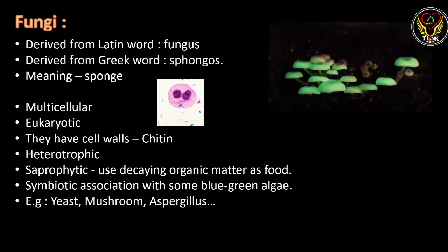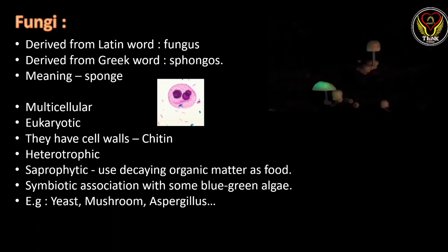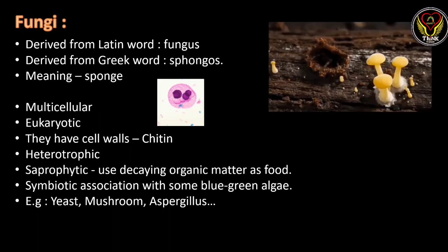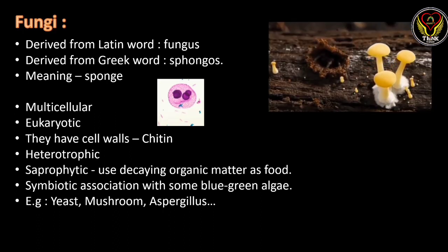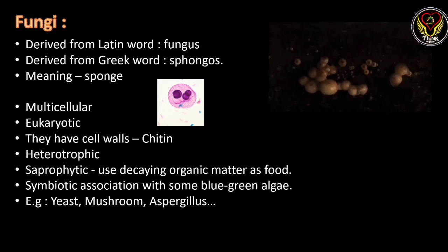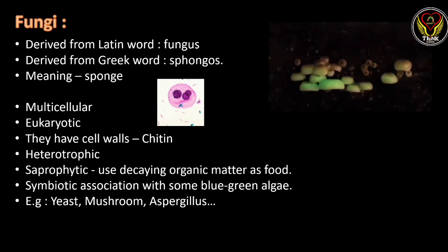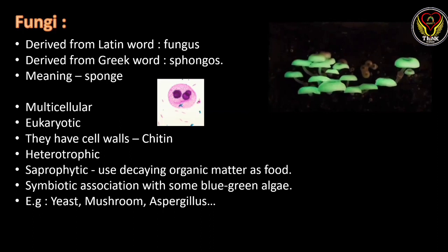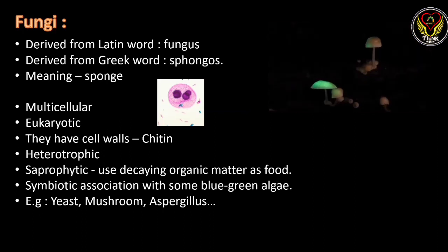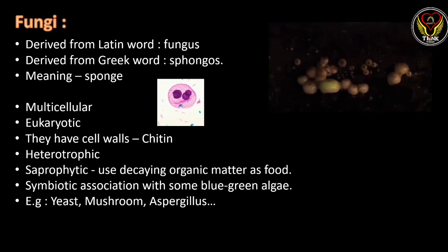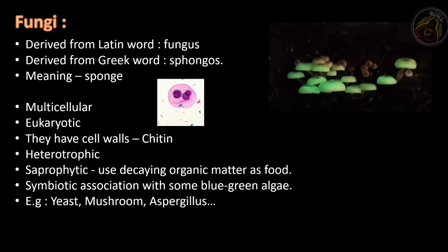The mode of nutrition in fungi is heterotrophic, meaning they depend on other organisms. Mainly they can be saprophytic or symbiotic. Saprophytic means they grow on dead and decaying organisms, and they can also form symbiotic associations with some blue-green algae. Examples include yeast, mushroom, aspergillus, and others.